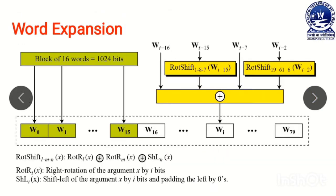Look at the word expansion. One question may arise: why do we use word expansion? What is the need of word expansion? In SHA-512, in the processing phase, we need 80 number of words. For this reason, word expansion is used. In word expansion, we take the block of 16 words — that is the first block of our message, which is divided into 16 number of words and which size is 1024 bits. These 16 number of words are expanded into 80 number of words.